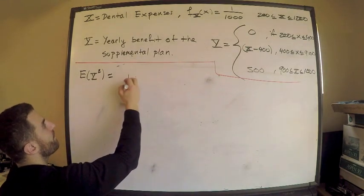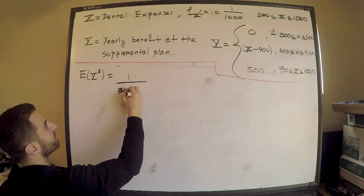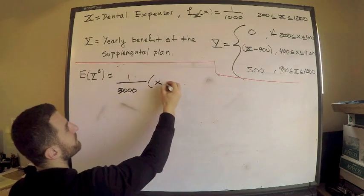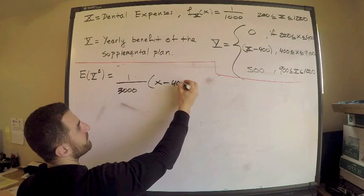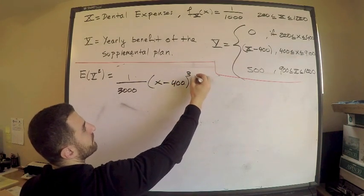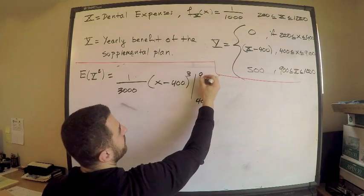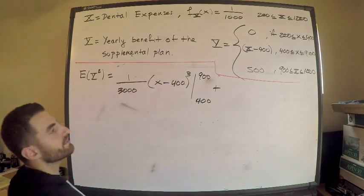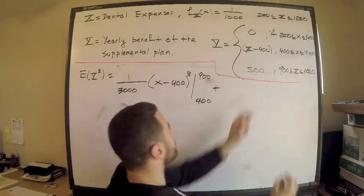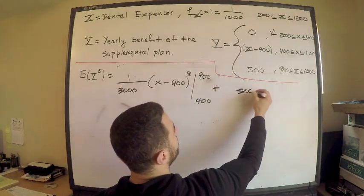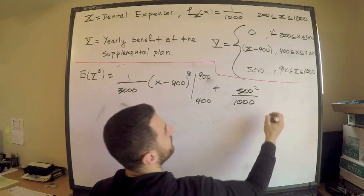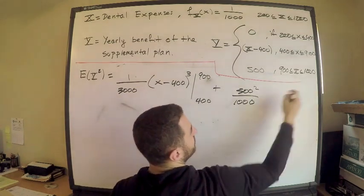For the first part, this is going to be 1 over 3,000 times x minus 400 to the what? To the cube. Going from 400 to 900 plus, now I need to square this. So this is 500 squared over 1,000 times the length of my interval, which is 300.